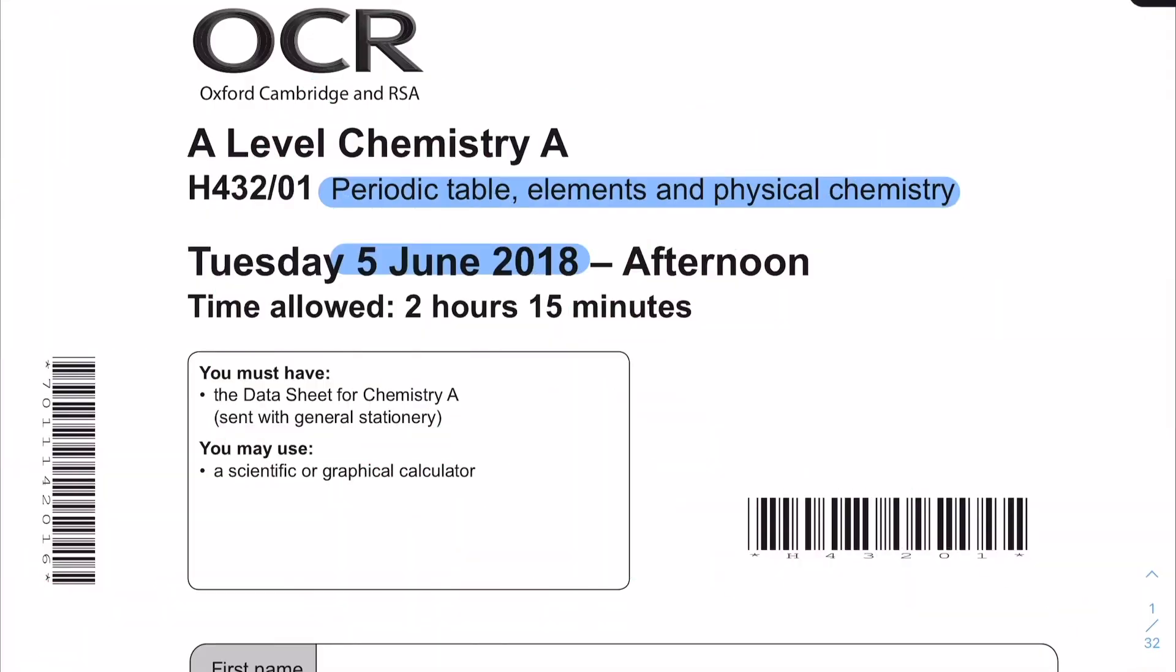I hope you found this tutorial helpful for explaining the answers to the multiple choice questions in the Periodic Table, Elements and Physical Chemistry paper from the 2018 OCR A-level chemistry exam series. If you did find the video helpful I would appreciate it if you could leave me a like before you go so that YouTube knows I still exist. Until next time everybody, happy revising!